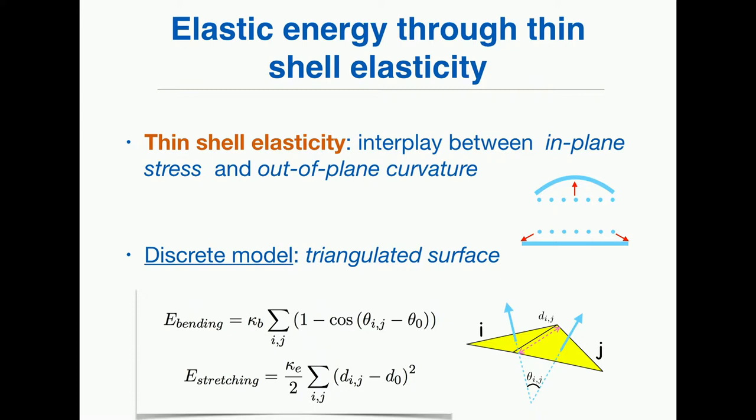We introduce a preferred angle, assuming that the protein, by itself, if self-assembled with some other proteins, wants to have some local curvature. At the scale of two proteins, this is an angle between the two proteins. The other potential is just the stretching of the triangular edges, reflecting the fact that upon assembly, you may have some compression or stretching.